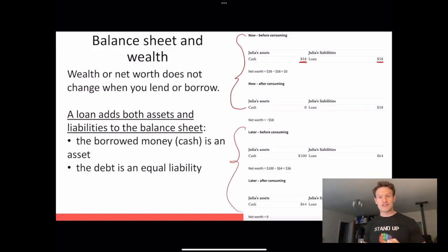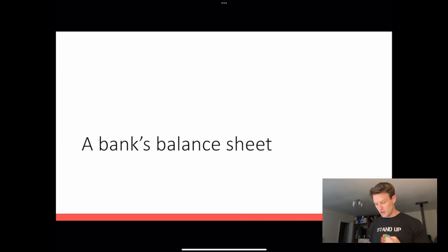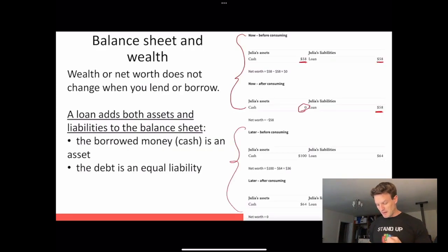After she consumes that money now, she has nothing in her bank account, but she still owes $58. Her net worth is therefore minus $58. She owes the bank $58, and then she's going to also have to pay interest on that loan in the future.